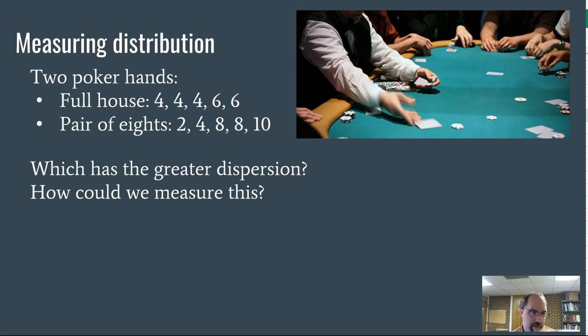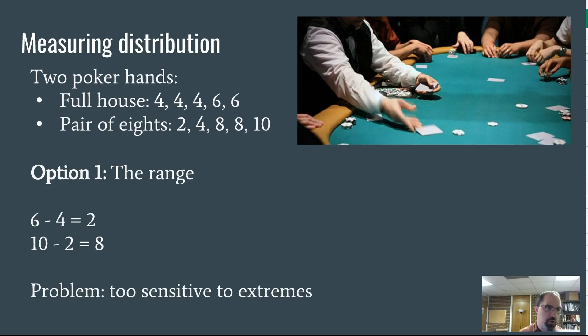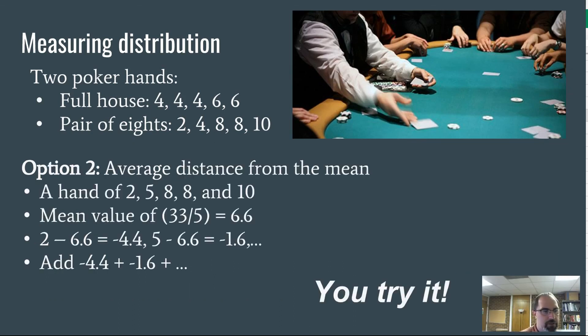One easy option is let's just look at the range. We've got on the one hand, 4 to 6, that's only 2. The other one goes from 2 to 10. That's 8. That's really big. The problem is that it's too sensitive to extremes. What if that pair of eights hand was literally 7, 7, 8, 8, 10, and the full house was 4, 4, 4, 7, 7? They would both have a range of 3-ish, but the 7, 7, 8, 8, 10 would be potentially much more tightly clustered. Outliers can just mess with stuff if you just look at the range.